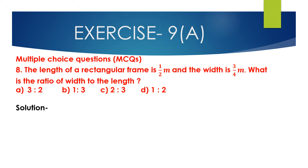Now question number 8. The length of a rectangular frame is half a meter and the width is 3/4 meter. What is the ratio of width to that of the length? The options are: (a) 3 is to 2, (b) 1 is to 3, (c) 2 is to 3, and (d) 1 is to 2.